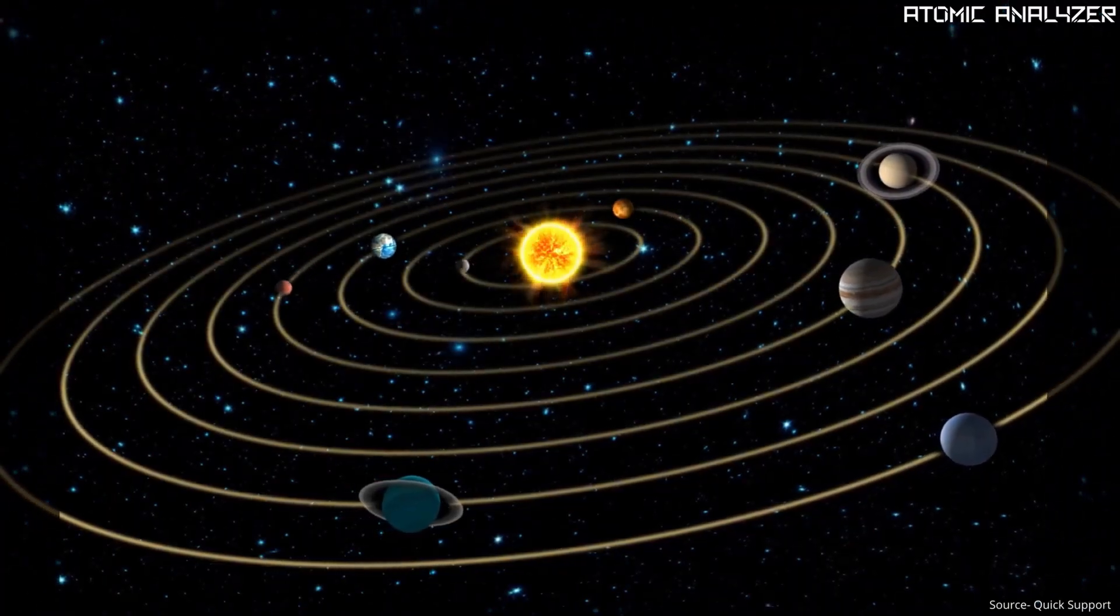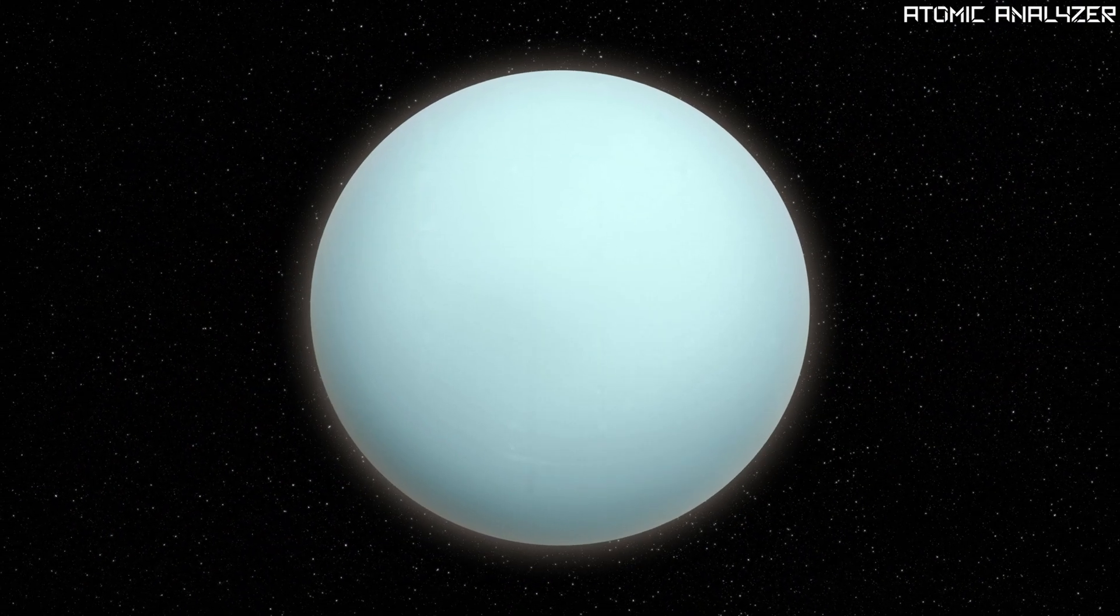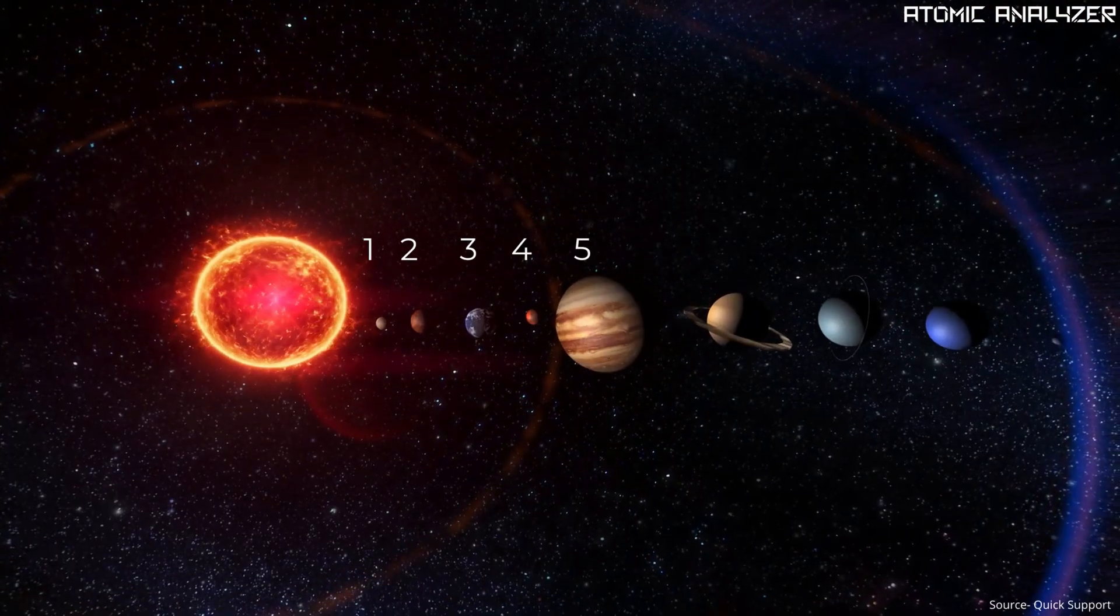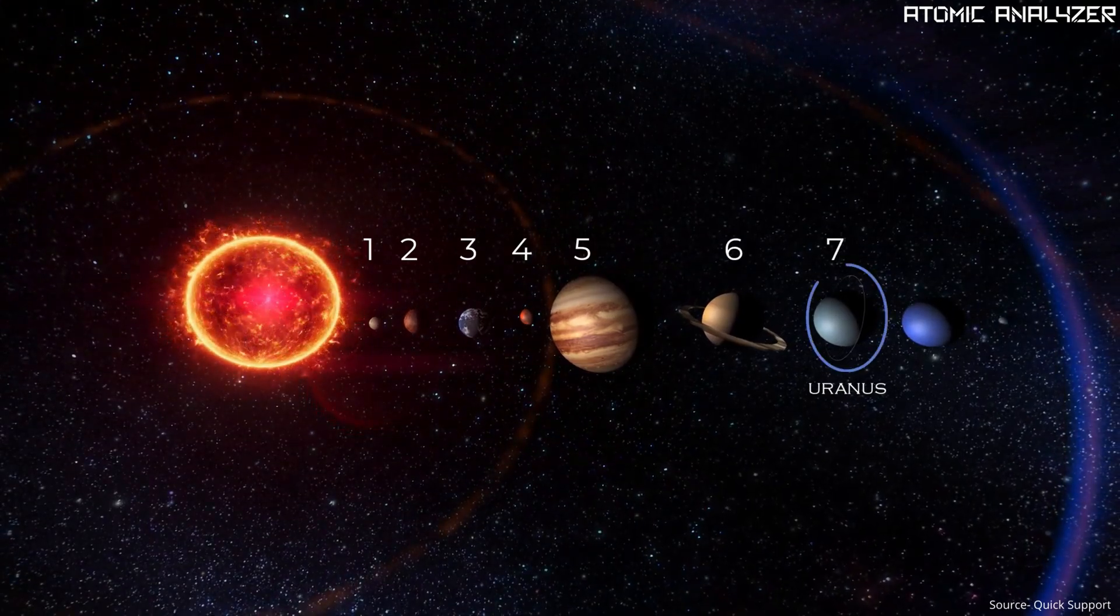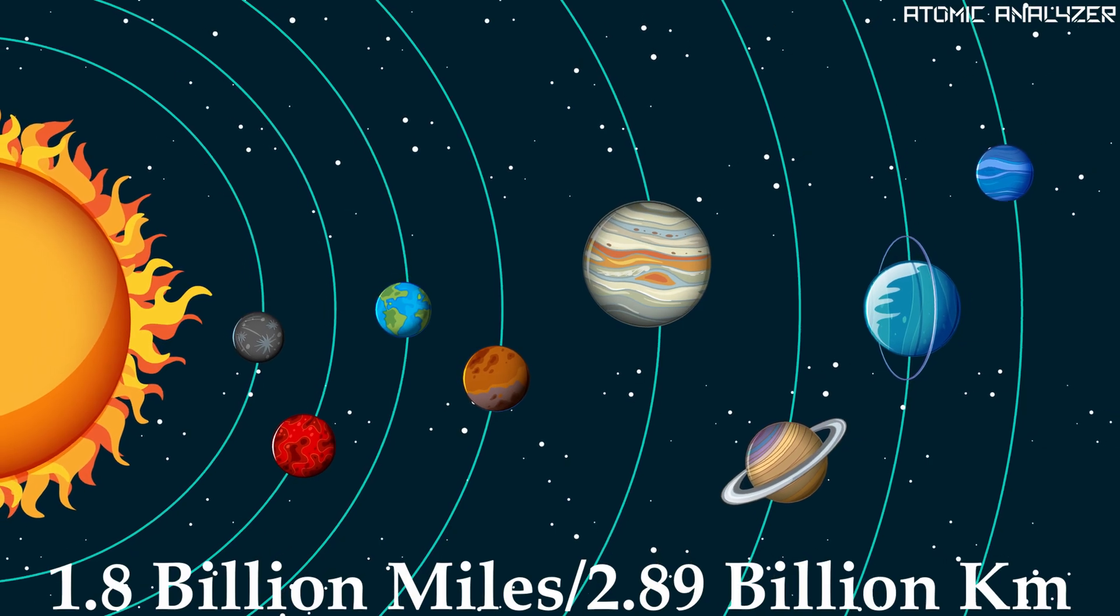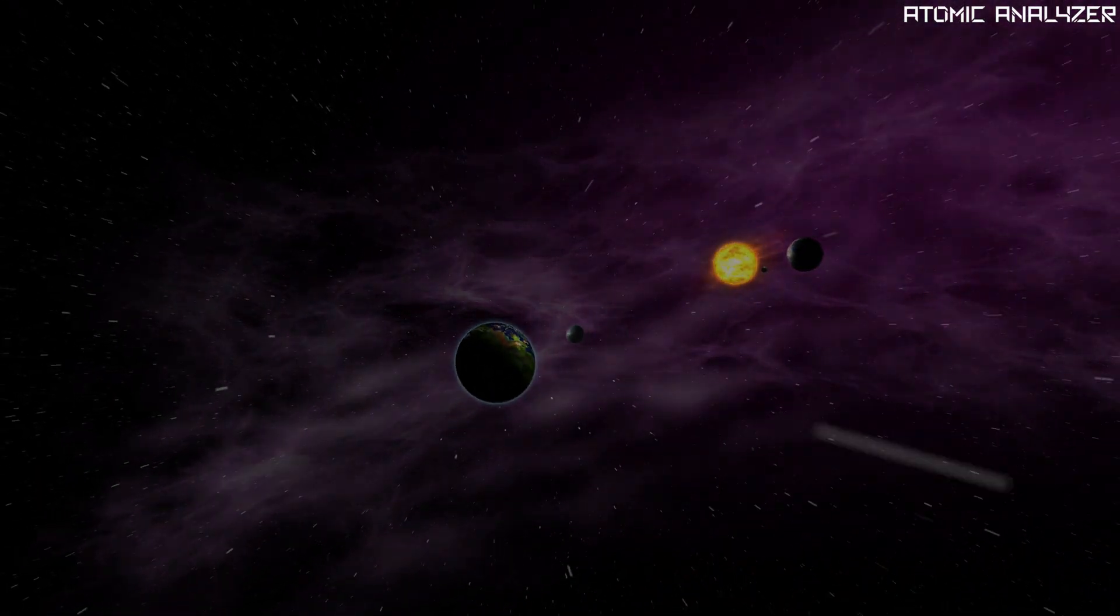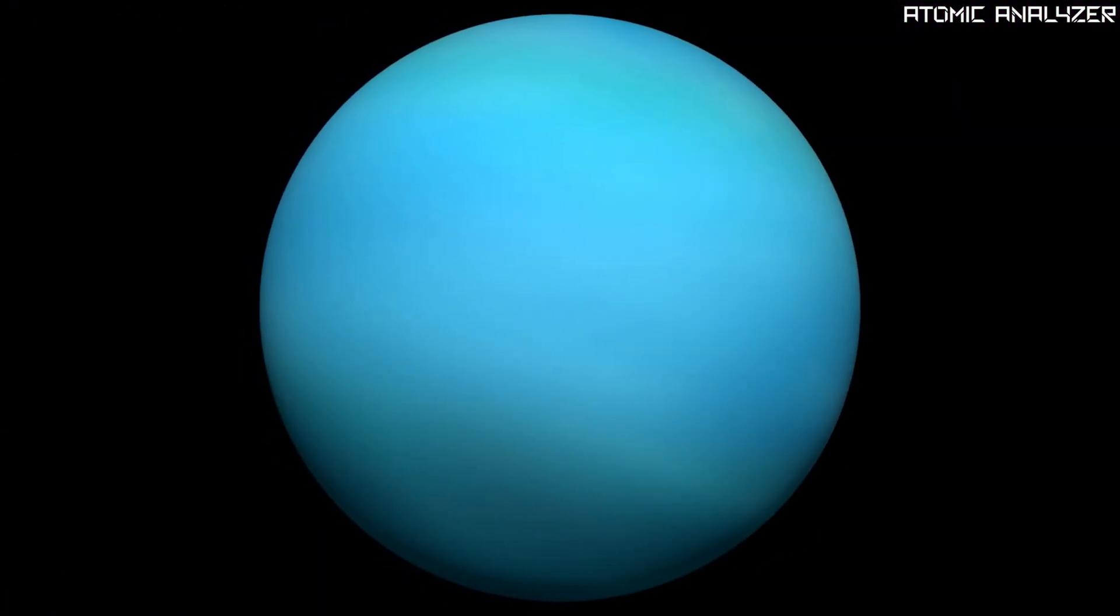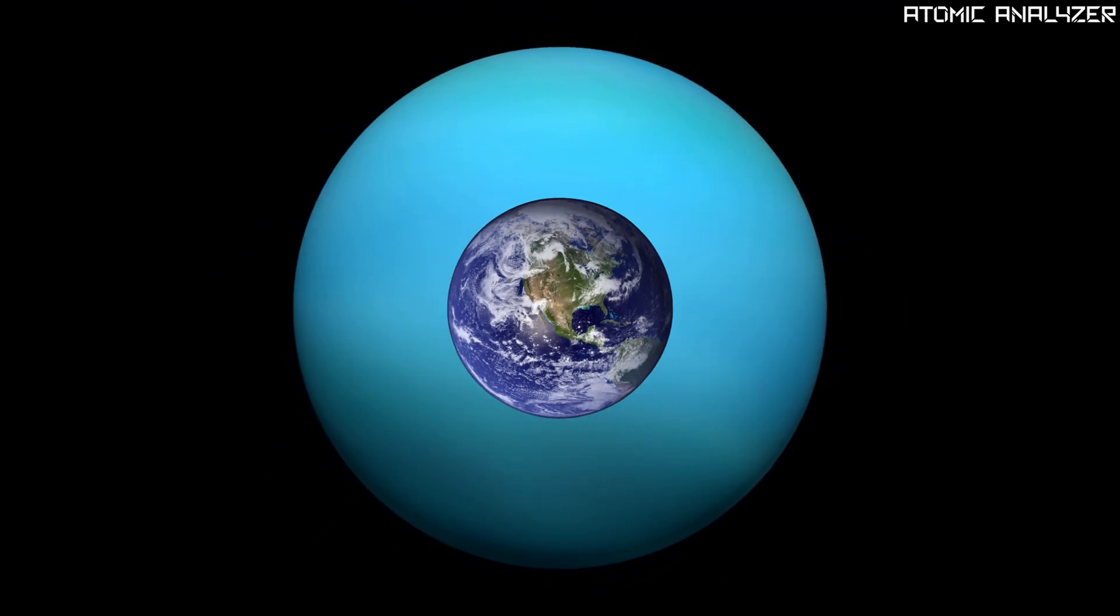Now where is Uranus located? It's a gas giant like Jupiter and Saturn and it's the 7th planet from the sun. It's about 1.8 billion miles away from us, that's incredibly far. In fact it's so big that you could fit about 63 Earths inside it.